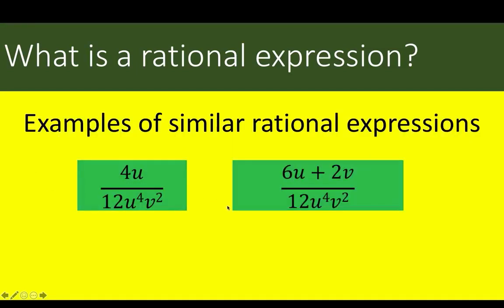In fractions, you talk about similar fractions. In rational expressions, we also talk about similar rational expressions. When the denominators of rational expressions are equal — in this case, we have 12u to the fourth v squared as the common denominator — then we say that these two rational expressions are similar.